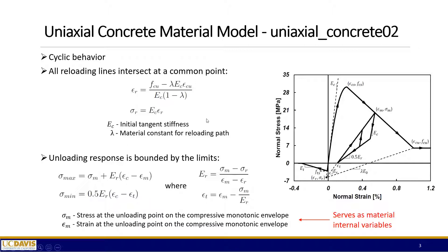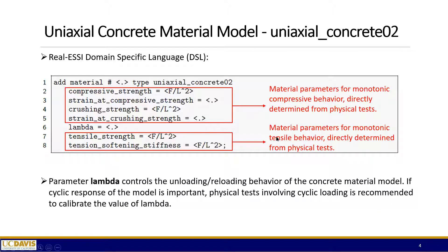The cyclic behavior is mainly controlled by this one parameter named lambda, which is used to define the intersection of all the unloading paths. So here are some more equations, but I'm not going to go into detail. If you're interested, please go to our manual for more theoretical background. Mainly I'm going to talk about the Real-ESSI domain specific language or DSL for this material model.